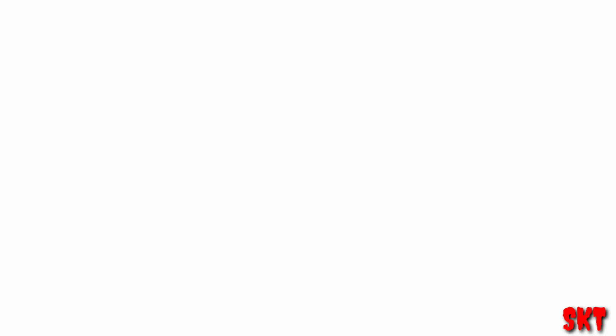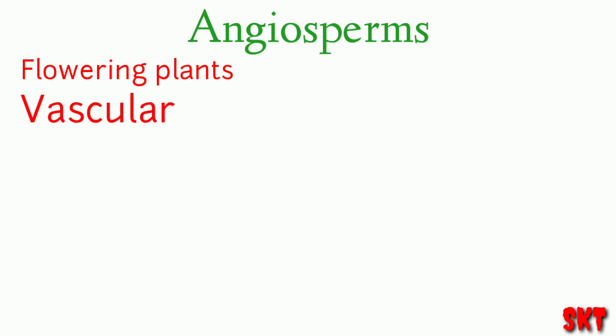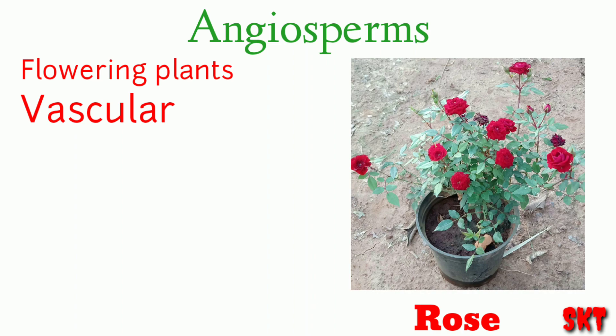The last one is angiosperms. These are also called flowering plants since they produce flowers. These are also vascular plants and pollination is indirect. Double fertilization characteristically occurs in angiosperms to produce an embryo as well as endosperm. The endosperm is neither haploid nor diploid but is triploid and forms after fertilization. Common examples are hibiscus, rose, and others.